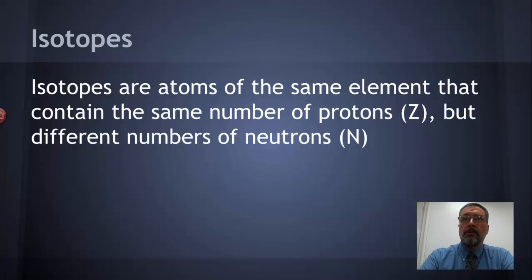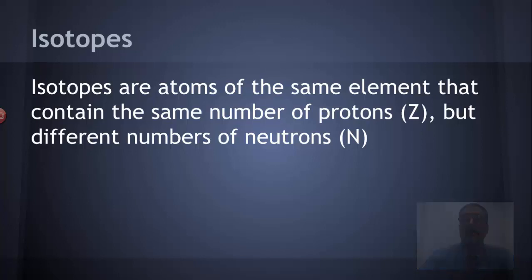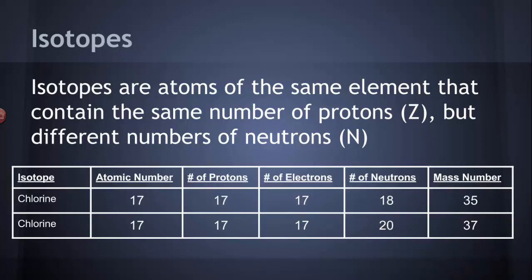Sometimes isotopes of certain elements are radioactive. Sometimes they differ in mass because they have different numbers of particles in the nucleus. Here's a couple of isotopes as an example.